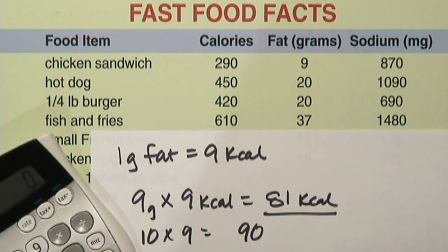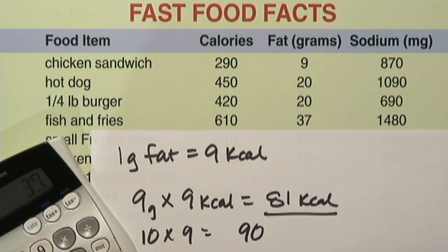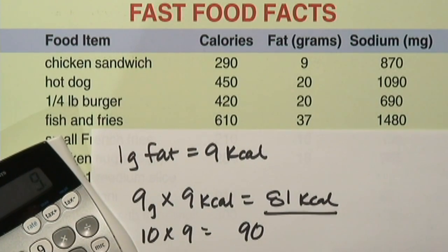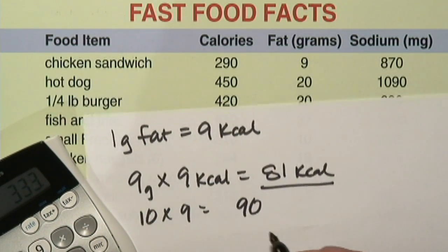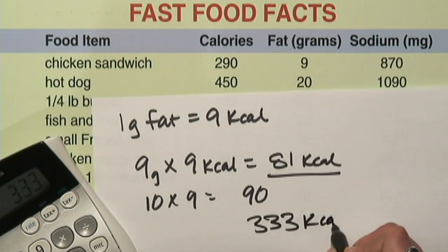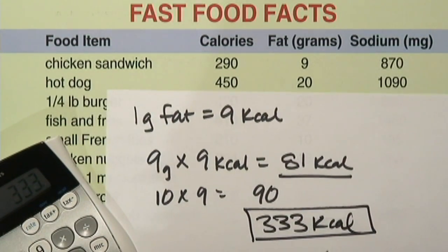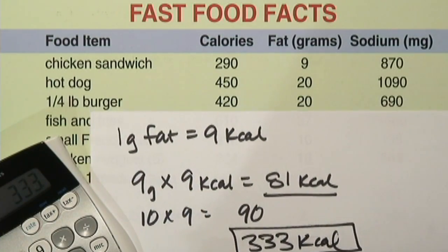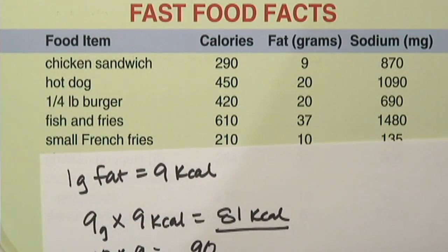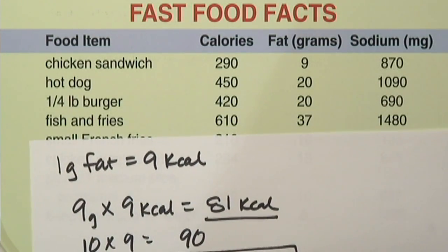We'll do a little bit bigger one here — fish and fries. I'm going to use my handy dandy calculator to help with this one. 37 times 9 calories per gram is 333 calories. You know that 333 calories are coming from fat out of this fish and fries.